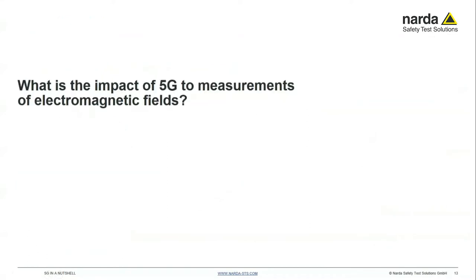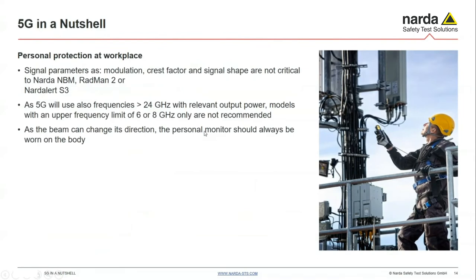Coming now to the subject of testing — what does this mean for measurement of electromagnetic fields? Starting with personal protection at the workplace, testers like the NADA Redman, the latest NADA Redman 2, the NADA Alert S3, or the NBM broadband meter — all manufactured at NADA's facilities — cover the needs here. Modulation, crest, vector, and signal shape are not critical to those instruments, so they give you the correct test result wherever and whenever you are measuring.